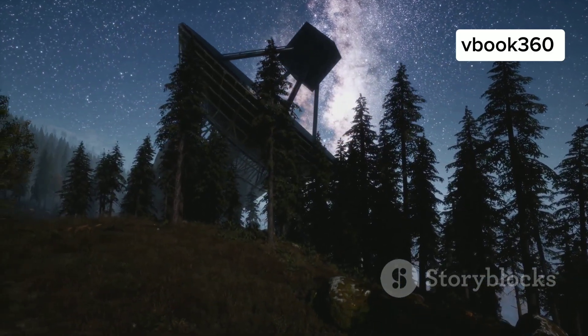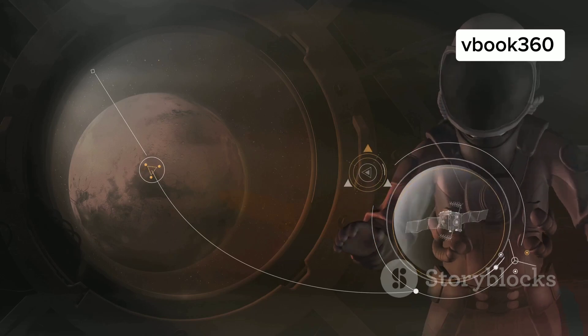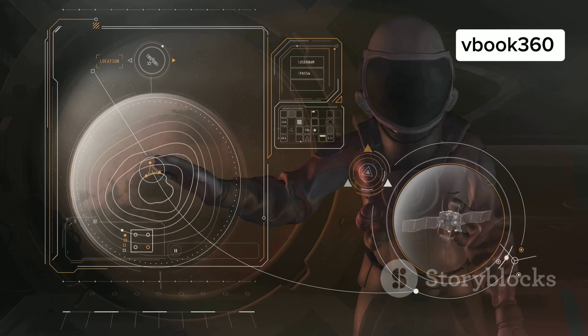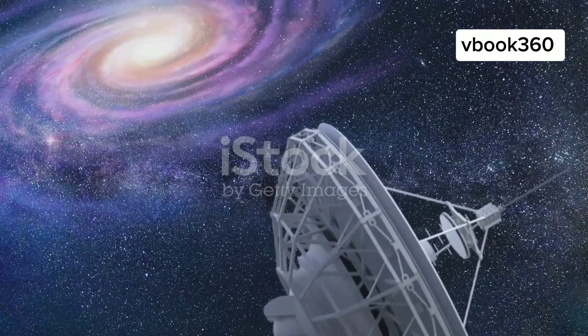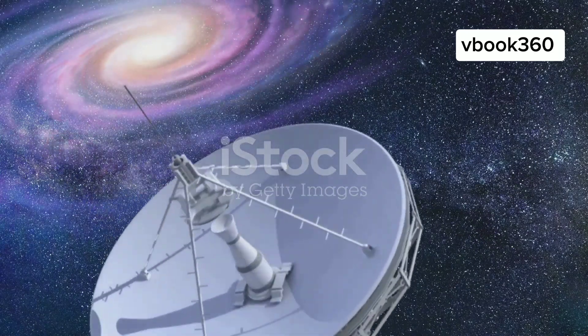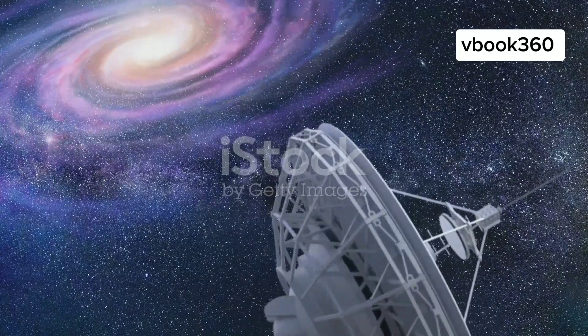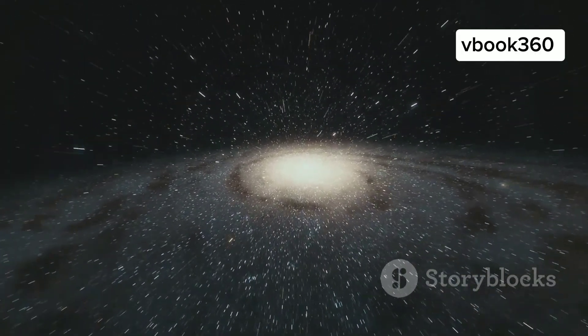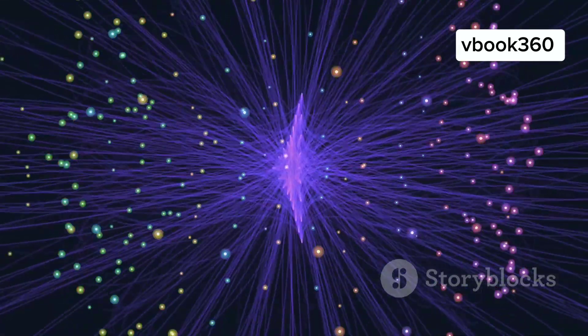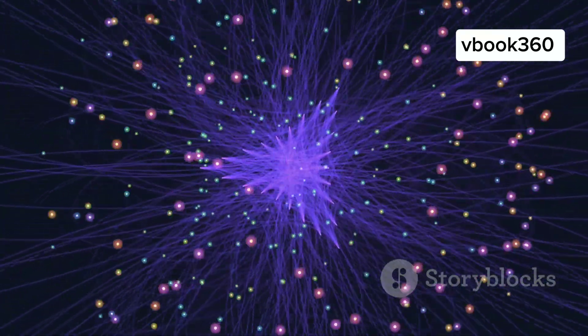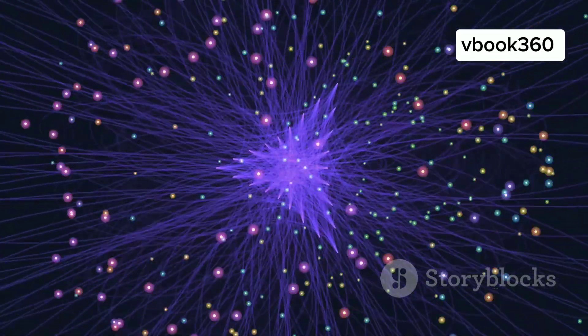This incredible discovery was made possible by a combination of advanced telescopes and sophisticated data analysis techniques. Astronomers used a telescope called the Sloan Digital Sky Survey, or SDSS, to observe light from millions of galaxies. The SDSS doesn't just capture images of galaxies, it also measures their distances and movements. By analyzing this vast amount of data, astronomers were able to identify the ring-like pattern of this distant group of galaxies.